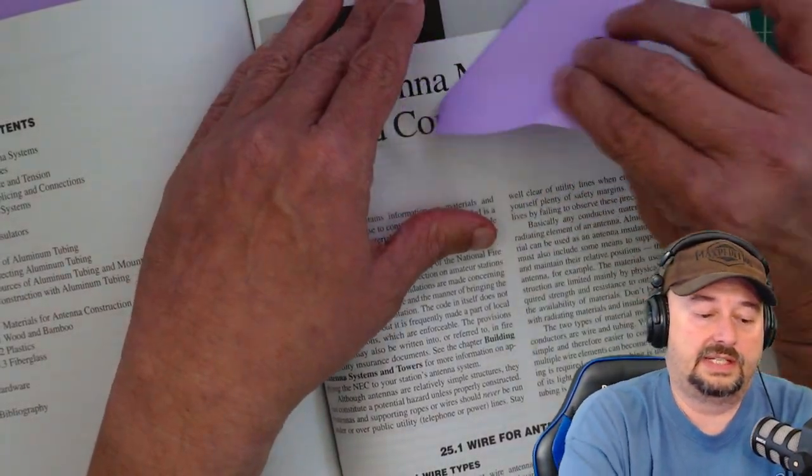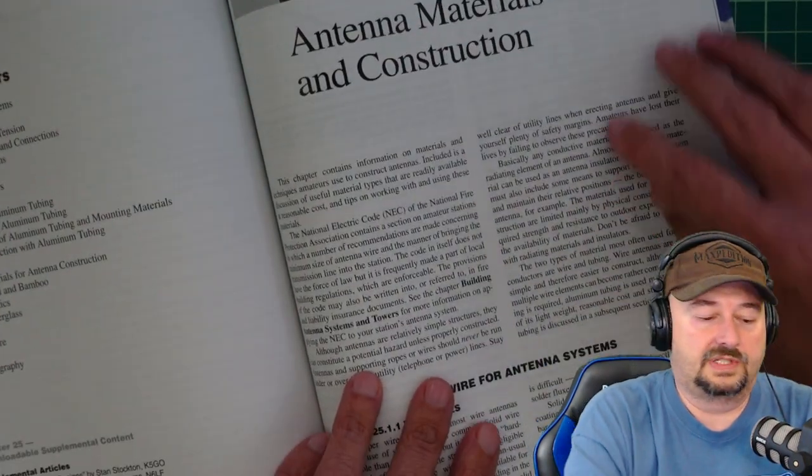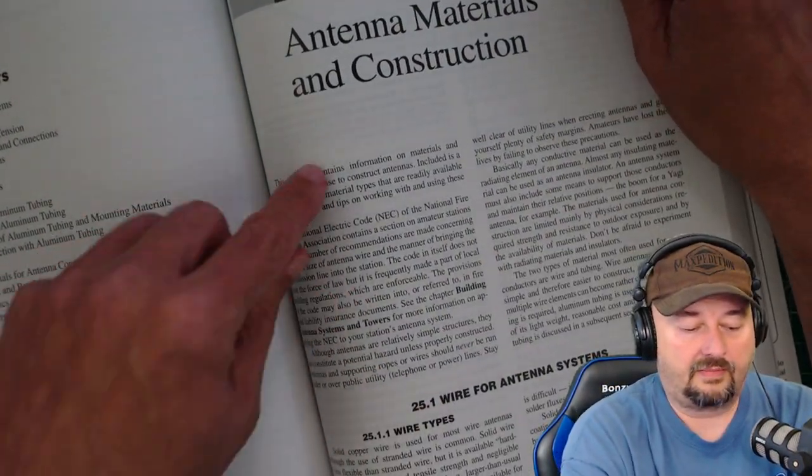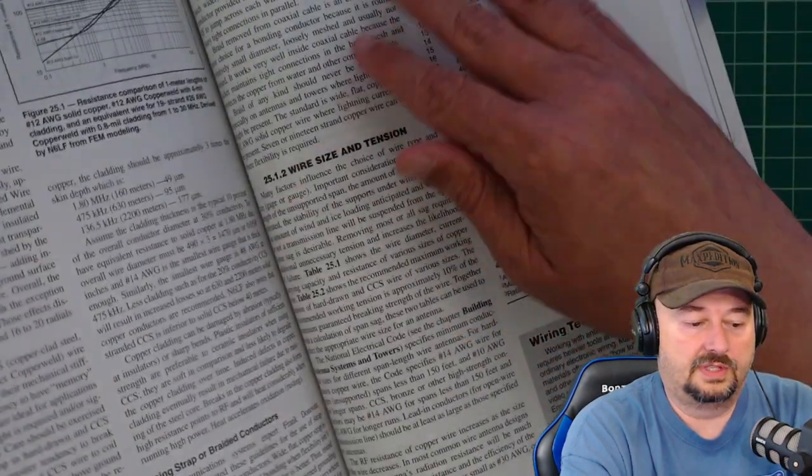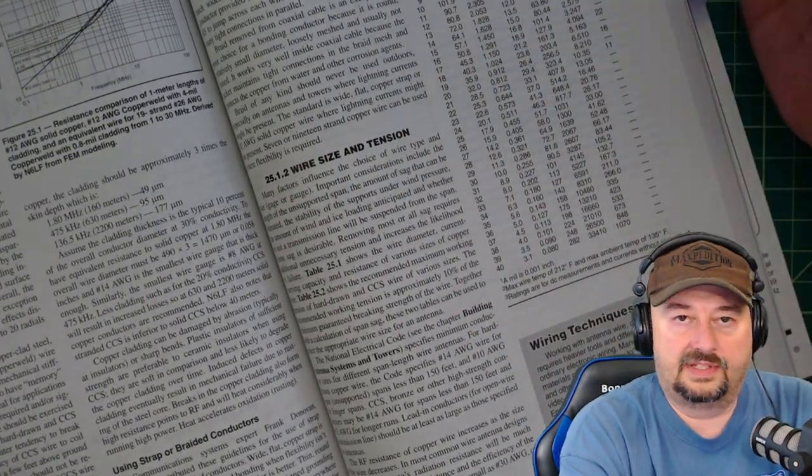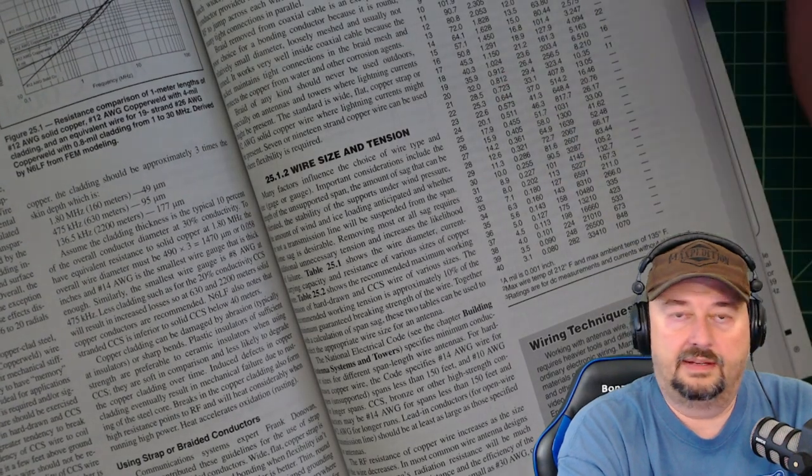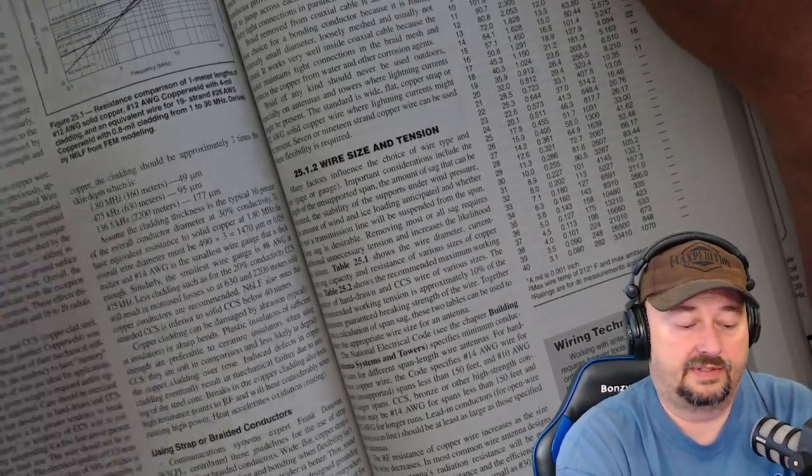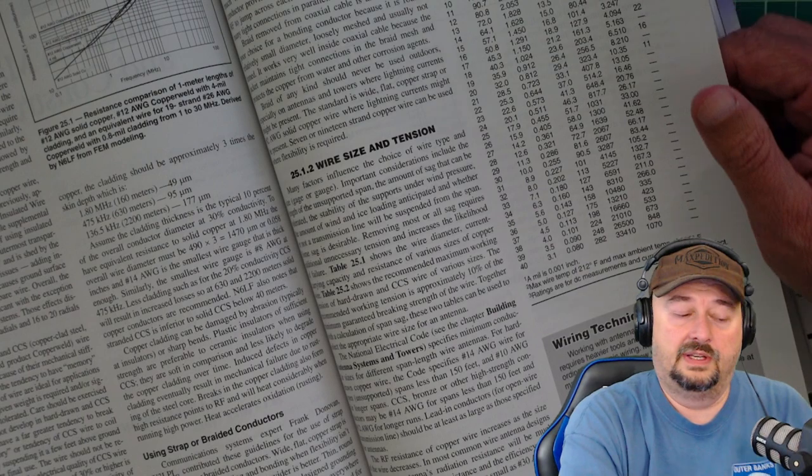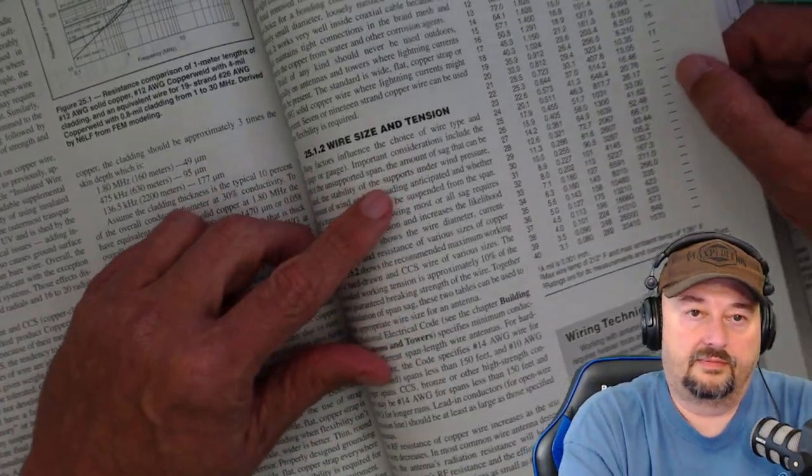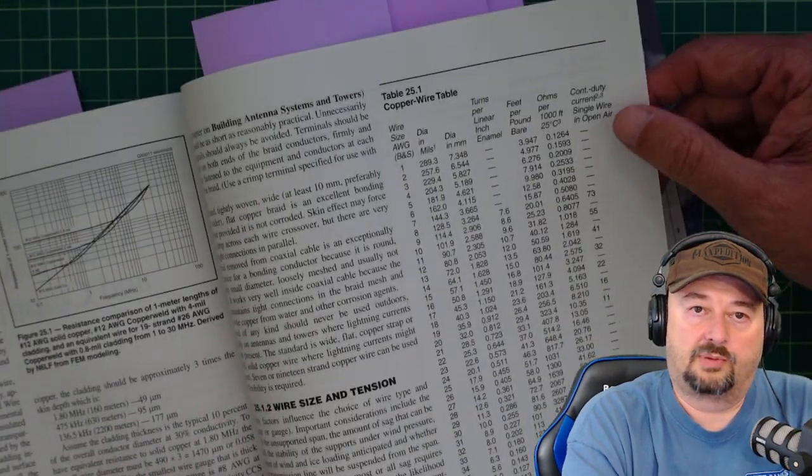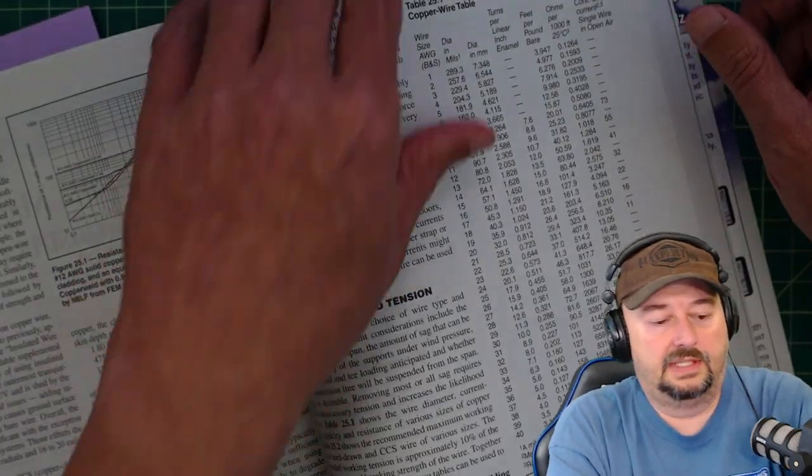It has a section on antenna materials and construction, which is something we saw in the other book. And it starts off talking about different types of wire that you may want to use. And then with wire, you have considerations like bandwidth and velocity factor. Here's a good one on tension because a lot of times we have these wires will actually help hold our antennas up. It has a data table here on copper wire that you might want to be taking a look at.